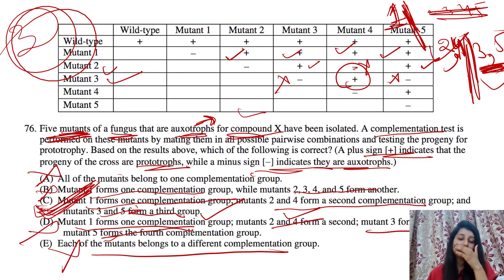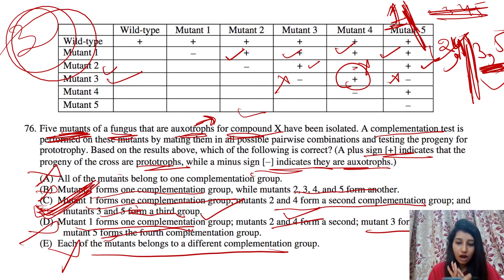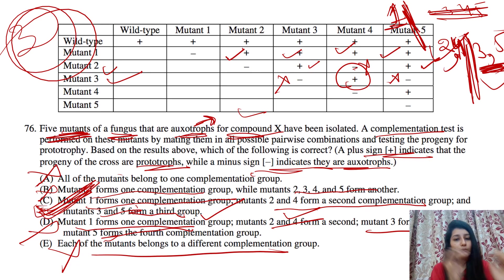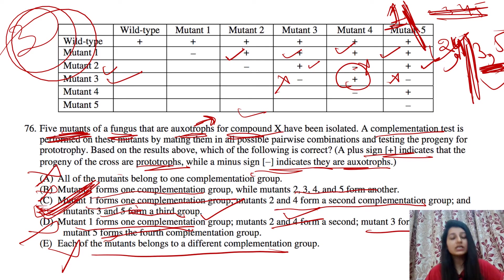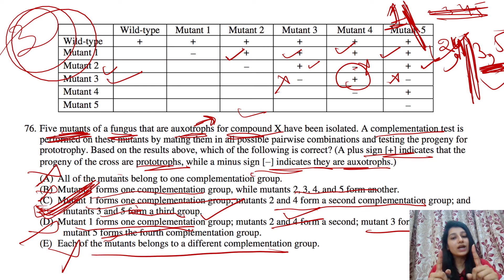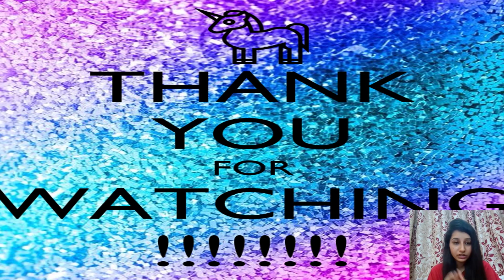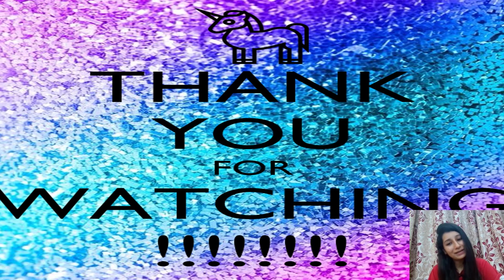These kinds of questions will be asked in your CSIR examination regarding the complementation test. You just have to look at the positive and negative signs: if positive, complementation has occurred — different complementation group and different genes mutated; if negative, same complementation group and only one gene mutated. I hope this video has helped you a lot. Don't forget to subscribe to my channel and share this video with your friends to help them crack the CSIR NET examination. Thank you so much, bye!